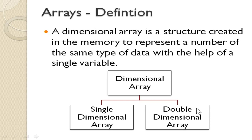A dimensional array is a structure created in the memory to represent a number of same type of data with the help of a single variable. This array variable is a structure used to create memory space and store data of the same data type. You cannot have different data types in a single array variable. If you create an integer array variable, you will store only integer values. If you create a character array, you will store only character values.